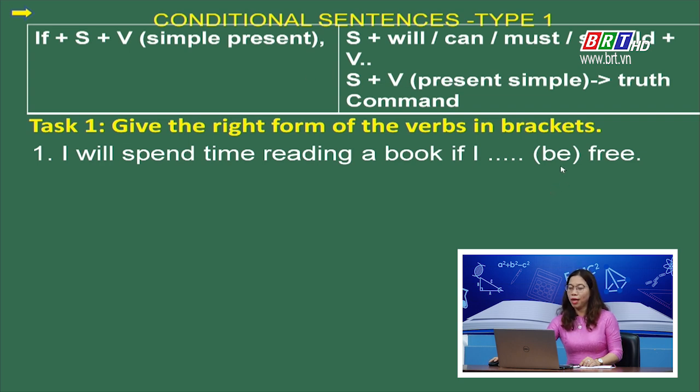Sentence 1: I will spend reading a book if I (be) free. Các em dễ dàng nhận ra động từ cần chia đang ở mệnh đề điều kiện, vậy chắc chắn sẽ dùng thì present simple. Động từ to be đi với chủ từ I — chúng ta sẽ có đáp án là am. Yeah, correct.